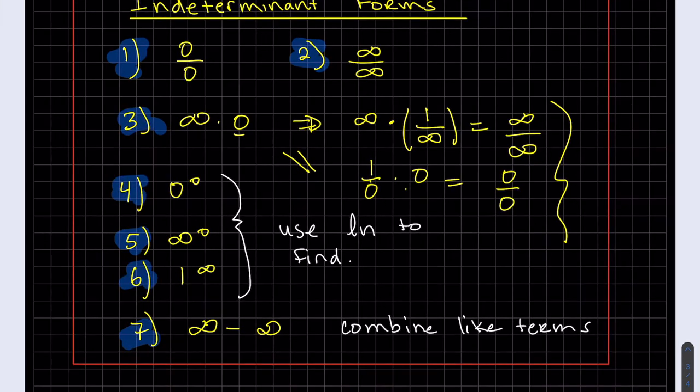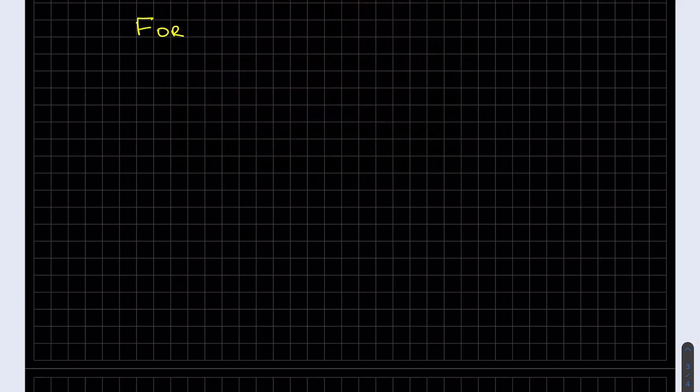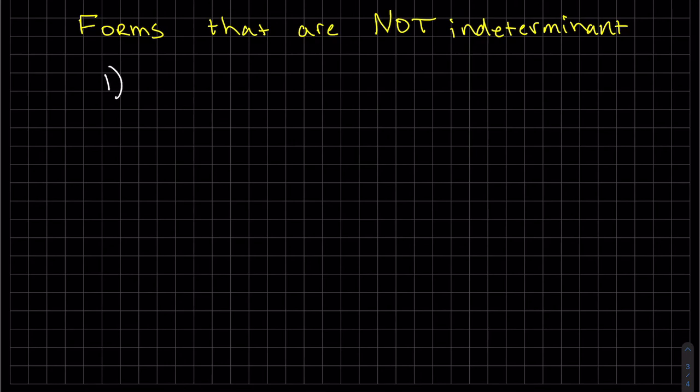So that's how we find limits of indeterminate forms. I think it's always helpful to know when you don't have an indeterminate form. Forms that look similar that are not indeterminate. Our first one is 0 over infinity. If they're stacked, they have to be the same thing. This can be written as 0 times 1 over infinity, which is 0 times 0, which is 0.